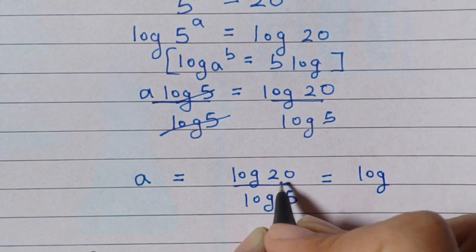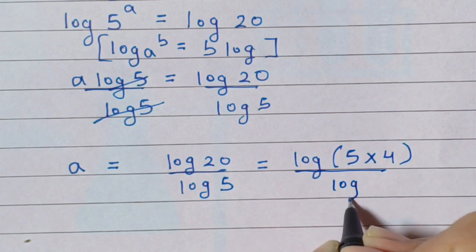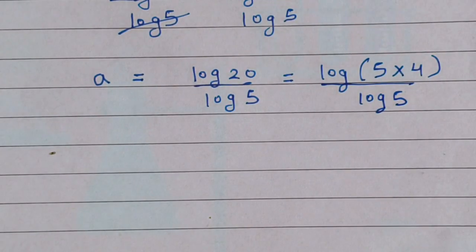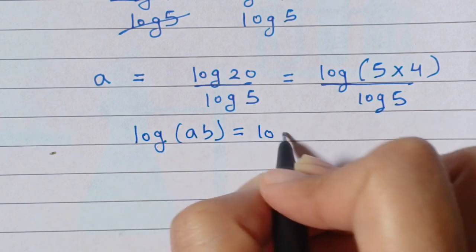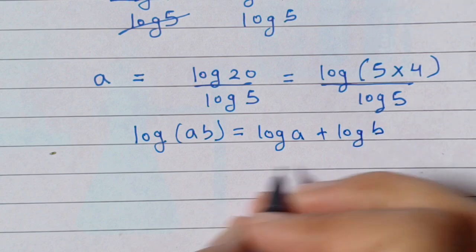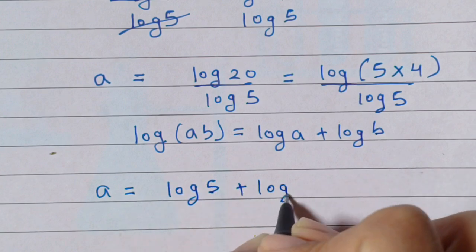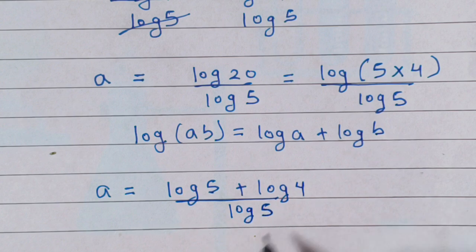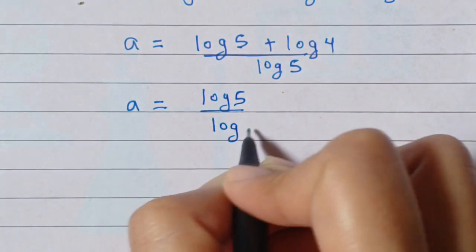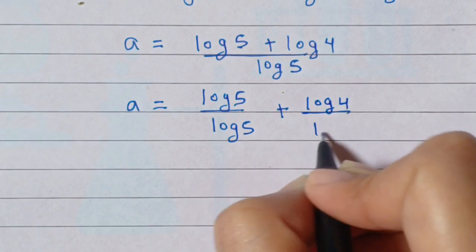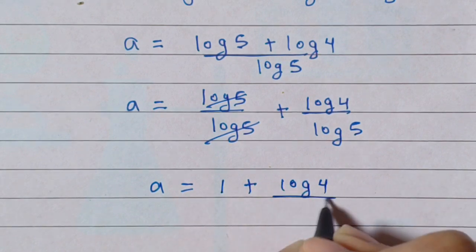So log 20 we can write as log of 5 into 4, divided by log 5. Then we will use the formula: log of a times b is equal to log a plus log b. Apply this formula here. We get a is equal to log 5 plus log 4, divided by log 5. Next step: a is equal to log 5 divided by log 5, plus log 4 divided by log 5, which gives a is equal to 1 plus log 4 to the base 5.